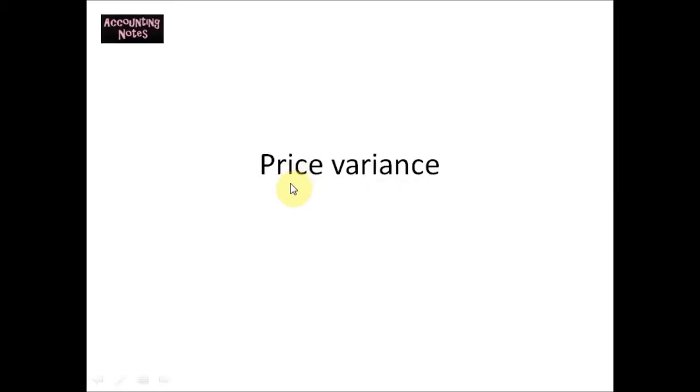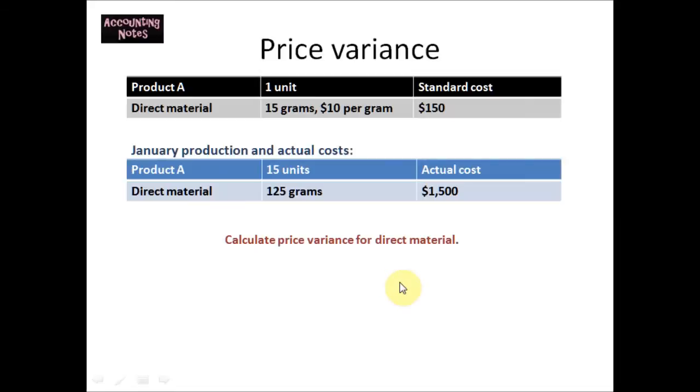This video contains an exercise on price variance. We have a company that manufactures product A with standard costs. The company has estimated that in order to produce one unit there is a direct material cost of $150. For one unit, the company uses 15 grams at $10 per gram. So this is the standard cost.